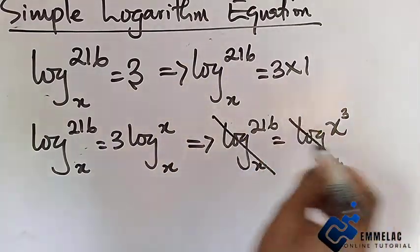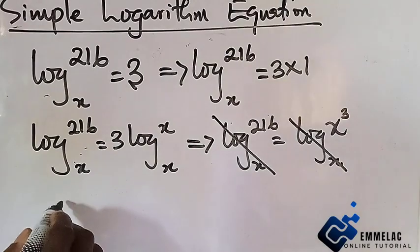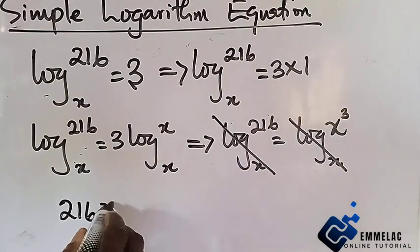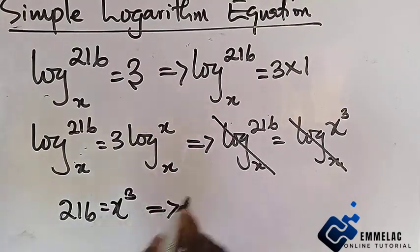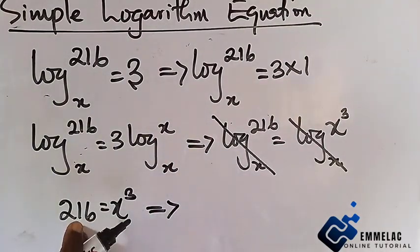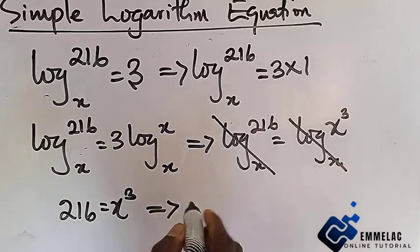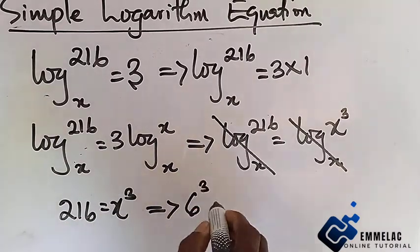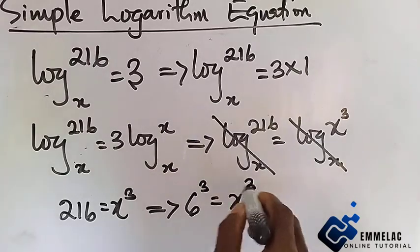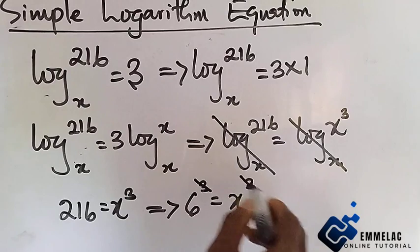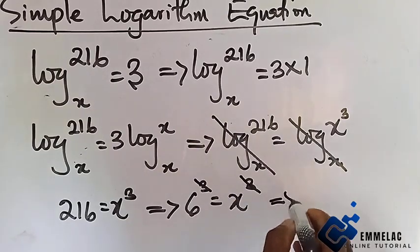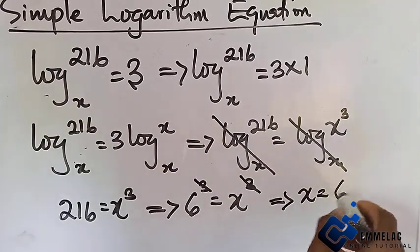Now simplifying further, we cancel the log bases. So we are left with 216 equals x³. This also implies changing this to a particular base that will give you a power of 3. So here we have 6³ equals x³. Thereafter the powers cancel each other and finally x equals 6.